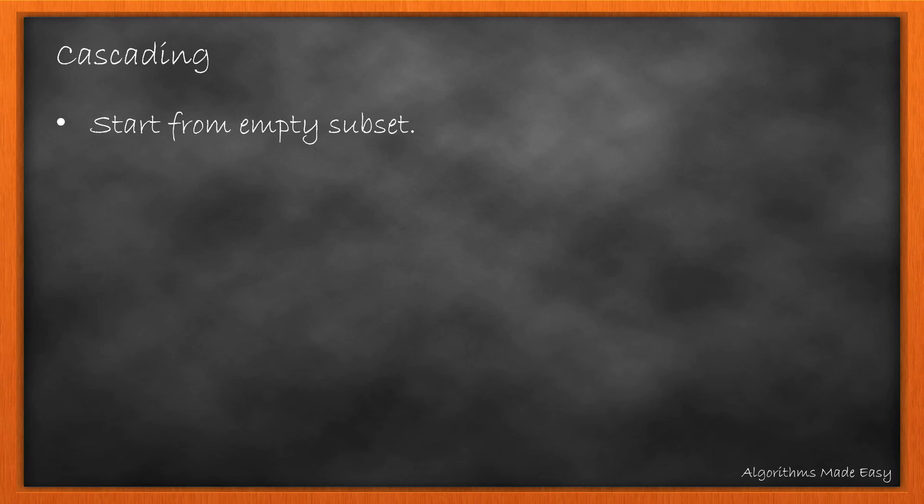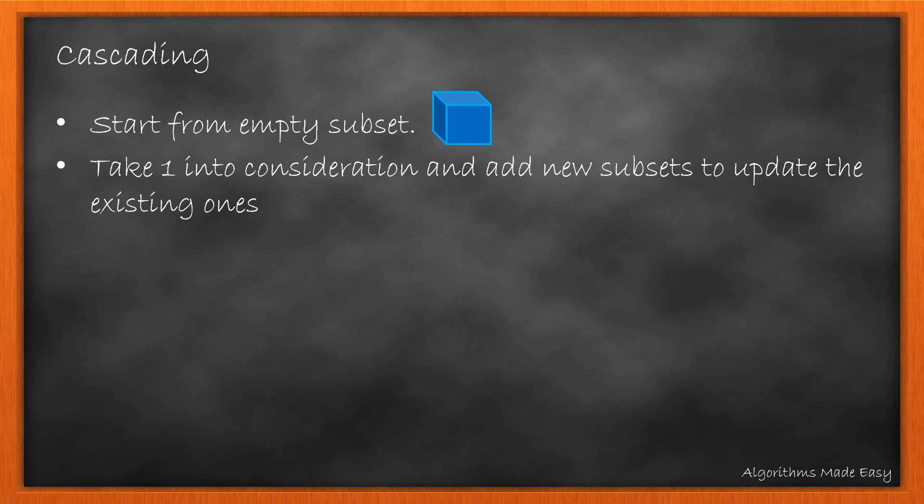The first one is cascading. It is an iterative approach wherein we will start with an empty subset. Taking the example of 1, 2, we first take 1 into consideration and add new subsets to update the existing ones.